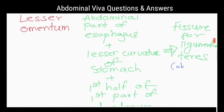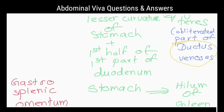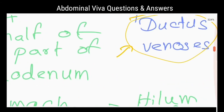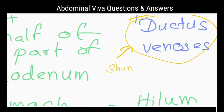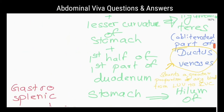What is ligamentum venosum? It is the obliterated part of the ductus venosus. What is the function of ductus venosus in the fetus? It shunts a greater proportion of oxygenated blood from the left umbilical vein to the inferior vena cava, bypassing the liver.